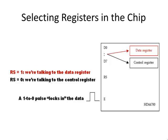Inside the HD chip there are two registers: a data register and a control register. There's an RS pin on the chip called register select, which tells the chip which register we're talking to. When the RS pin is a 1, we're talking to the data register; when it's a 0, we're talking to the control register. We have a port bit connected to RS, so we pull that port bit high or low accordingly. There's another pin called E, which stands for enable — pulsing it high and then low causes the chip to read the bits on D0 through D7 and copy them into the appropriate register.